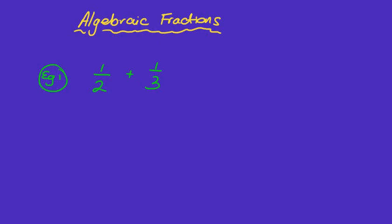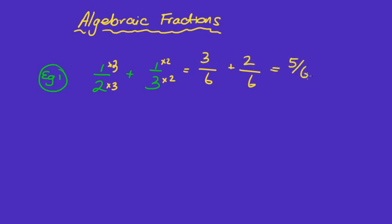How do we do a half plus a third? We need a common denominator, which we find by multiplying the denominators together. So we get something over six plus something over six. We times the top and bottom of the first fraction by three, and the second by two, to get three-sixths plus two-sixths, which equals five-sixths.